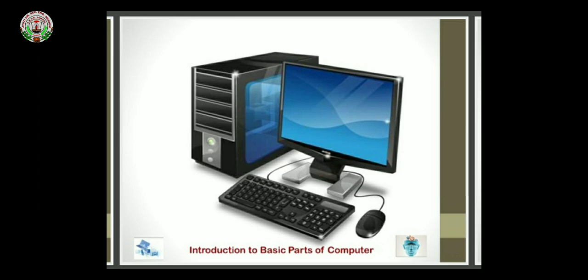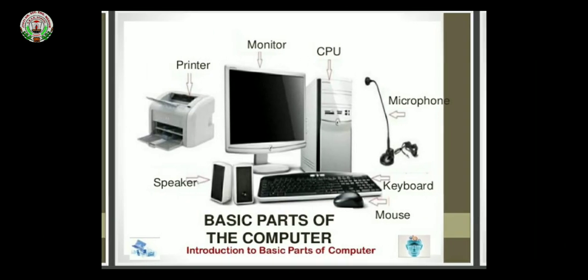Why do we use a computer? We use a computer because it works very fast, it saves our time and energy, and it also remembers many things. Its memory is sharper than ours as human beings. Now, come to the parts of the computer.